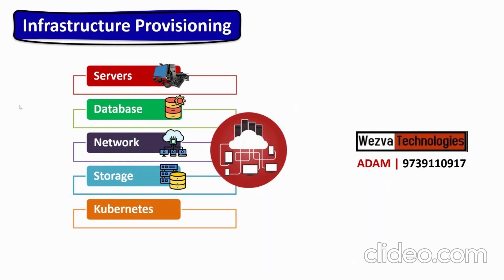And not just that — let's also talk about Kubernetes. One important thing we have to take care of is setting up a cluster to deploy our application in QA or production. As soon as we say Kubernetes, you have to take care of the master components — the control plane — as well as the data plane servers. Creating all of those is also called infrastructure provisioning. In simple terms, infrastructure provisioning is about creating all these components of your cloud environment.